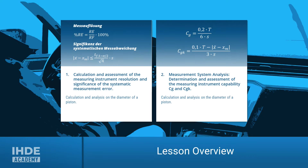This lesson is divided into two chapters. In the first chapter, we calculate and assess the resolution of a measuring device using an example. Using the same example, we will calculate the systematic error of the measuring instrument and check whether the result is significant. In the second chapter, we then carry out a measurement system analysis, where the measuring instrument capability is calculated and assessed.